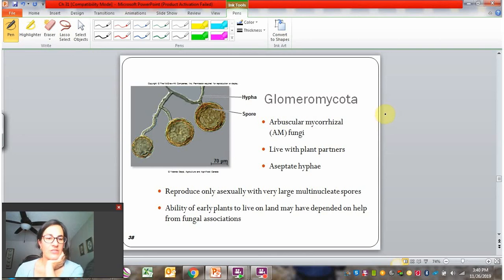So we'll survey the later diverging fungi now. One of the first of the group is the glomeromycota. This is actually more commonly referred to as the AM fungi or arbuscular mycorrhizal fungi.